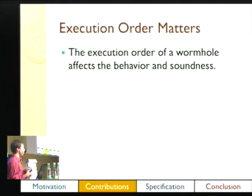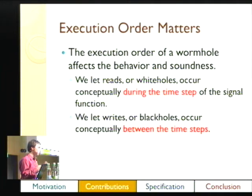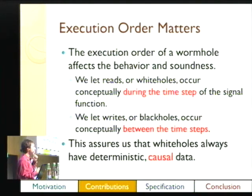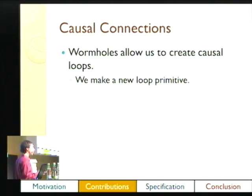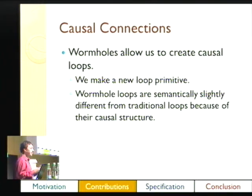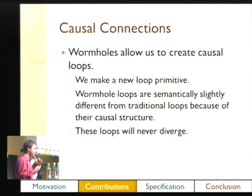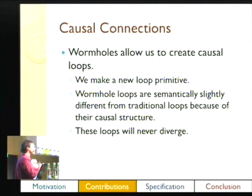One key thing is that the execution order of the wormhole really matters — whether you read from the white hole and write to the black hole or vice versa. What we say is: reads from the white hole happen during signal function execution, and writes to the black hole happen afterwards. In this way, reads will always have causal data — data from the past. It can never be that during one run we've written and then immediately read from it. This causal connection allows us to create loops that are causal. We have this new loop primitive; we don't need loop predefined, we can make it with wormholes. These loops won't diverge because the input data is always from the past.